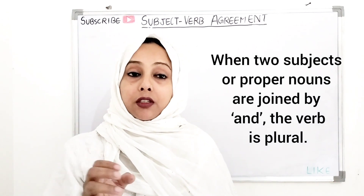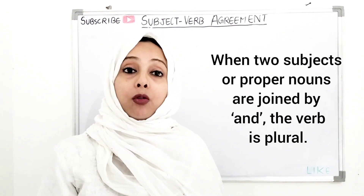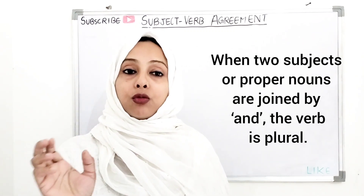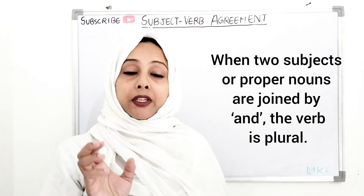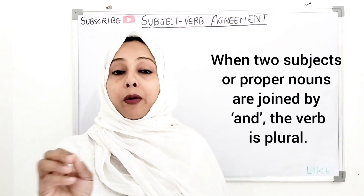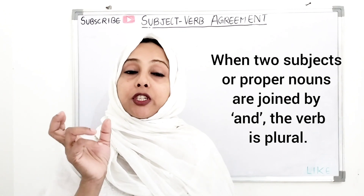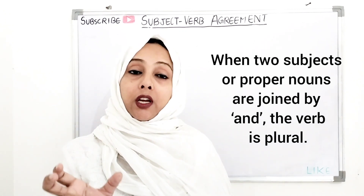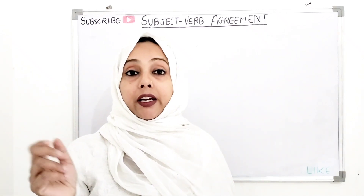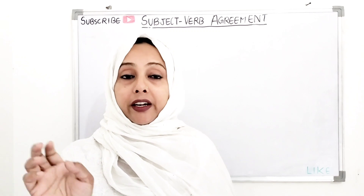Whenever we have two subjects that are proper nouns and they are joined together by using AND, then it goes with a plural verb. For example: 'Sam and Katie are in England.' Sam and Katie are both proper nouns joined by AND, so the plural verb 'are' is used.